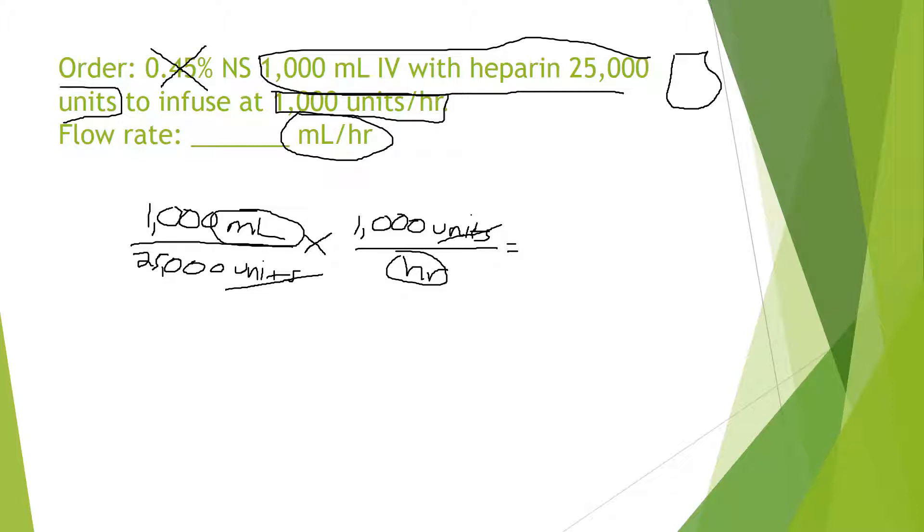And then when I do my calculations, I just pull up my calculator here. I just do 1000 times 1000. And I divide that by the 25,000. And I'm left with my final answer of 40 milliliters per hour.